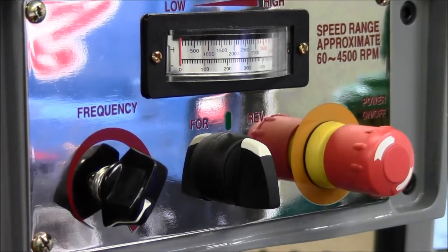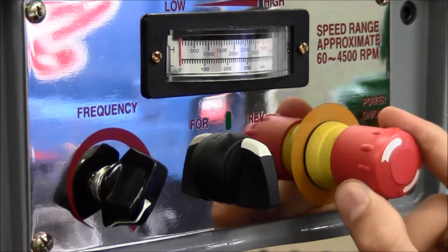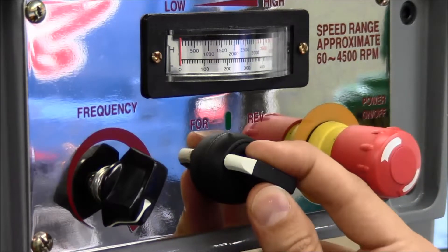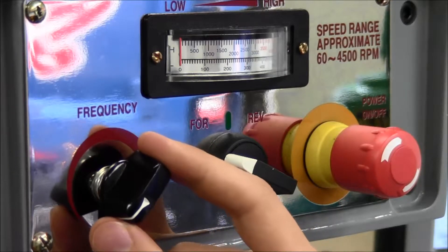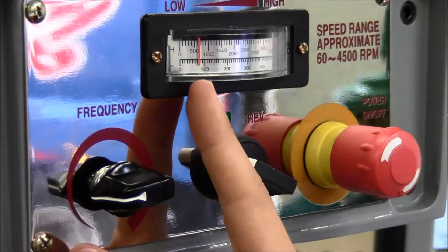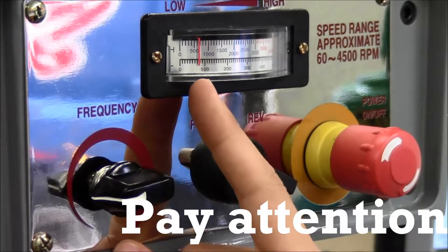To turn on the machine and set the desired rotating speed, first rotate and pull out on the emergency stop button, set the rotational direction to forward, and then turn the frequency knob until the desired RPM is indicated. For this example, the desired RPM is 600.